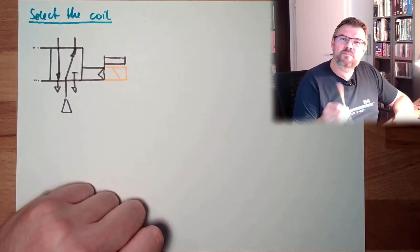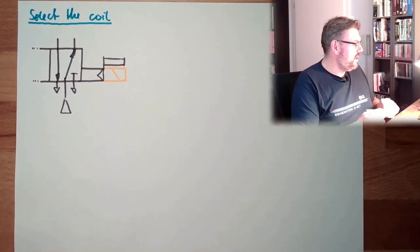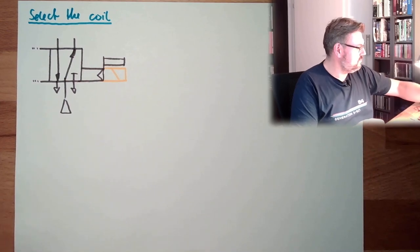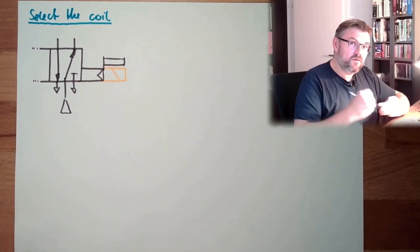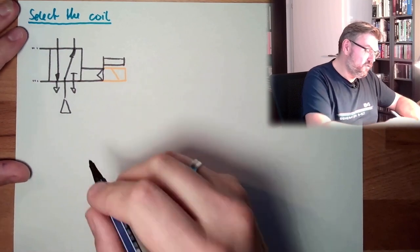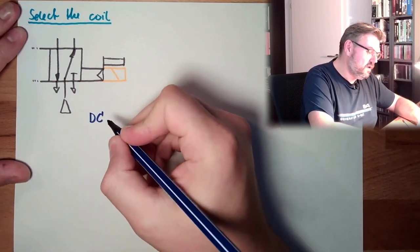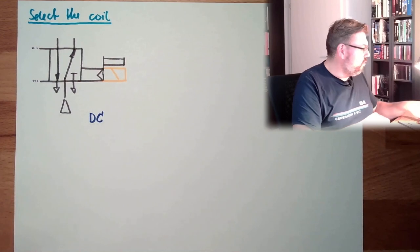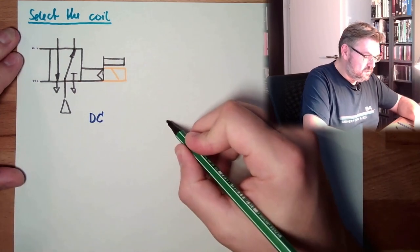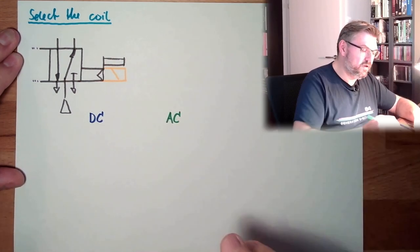So what are typical coils? Well, actually, you can have two types of coils. There are DC coils, direct current coils, and there are also AC coils. Alternating current.